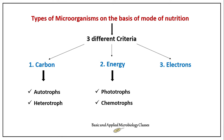Moving to the third criteria — on the basis of electrons — microbes can be classified as lithotrophs and organotrophs. So to summarize: on the basis of carbon source, autotrophs and heterotrophs are the types; on the basis of energy sources, phototrophs and chemotrophs are the types; and on the basis of electrons, lithotrophs and organotrophs are the types of microbes.